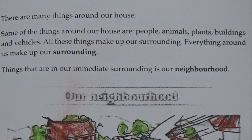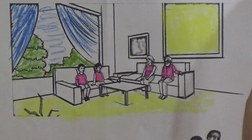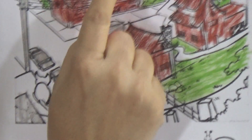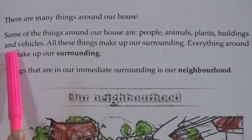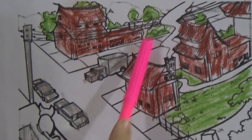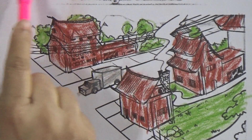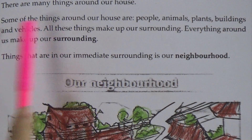Follow this figure — this is an example. There are many things around our house. Some of the things around our house are people, animals, plants, buildings, and vehicles. See this figure also — there is a house, a car, a cat, a tree, and a road.